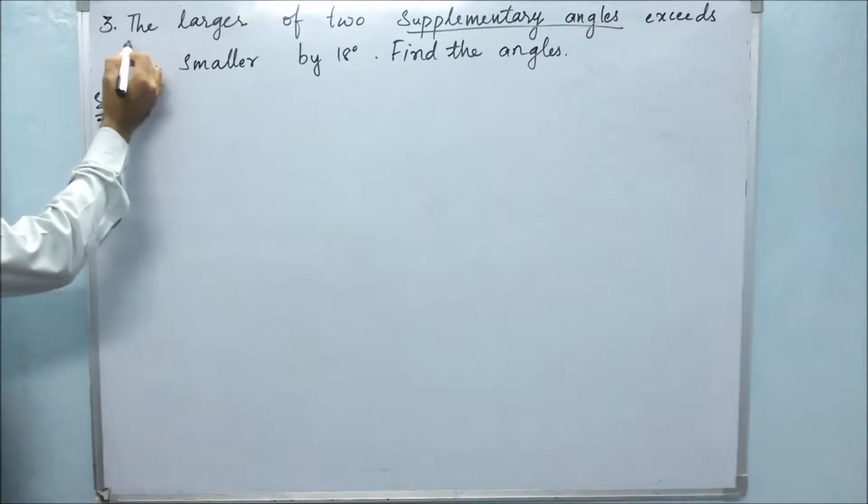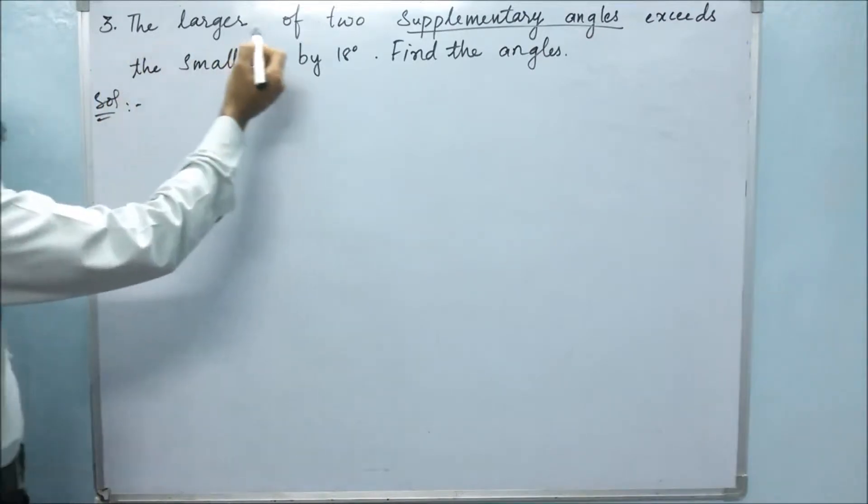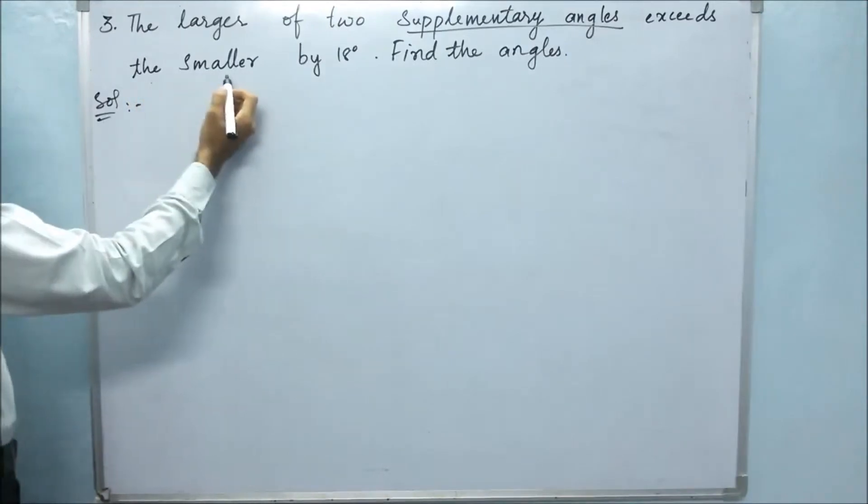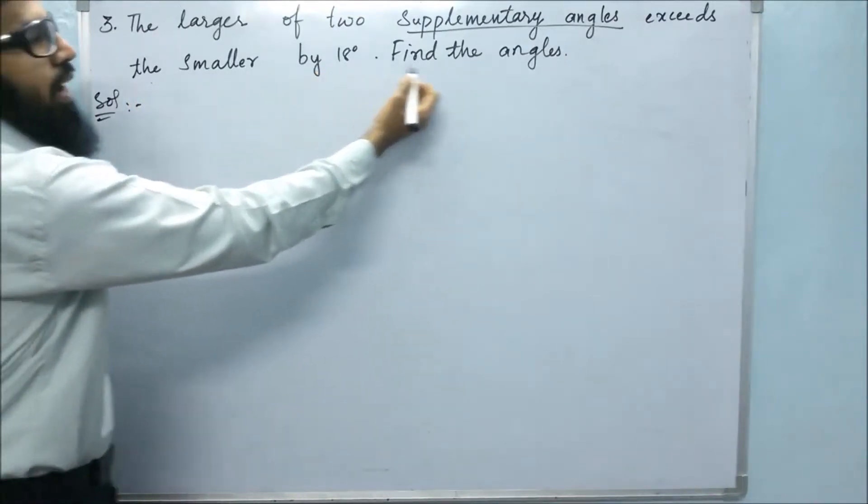In the third problem, they said that the larger of two supplementary angles exceeds the smaller by 18 degrees. Find the angles.